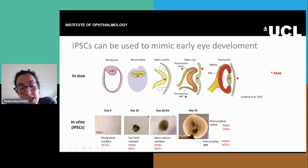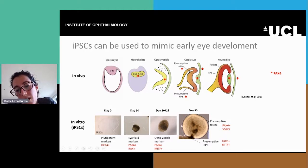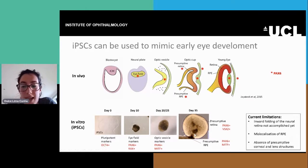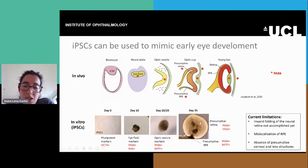Then further along, we see optic vesicle markers starting to appear. And then around day 35, we see a presumptive optic cup or an optic-like structure, which has the retinal markers on the outside in this ring, and we also see some RPE patches at the bottom. One limitation of this process — something a lot of people are working on — is that we cannot make the folding that we see in vivo happen in the iPSCs, probably because we do not have the surface ectoderm signals forcing this process.